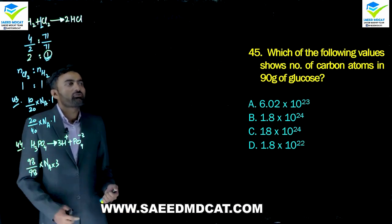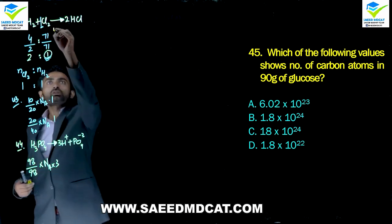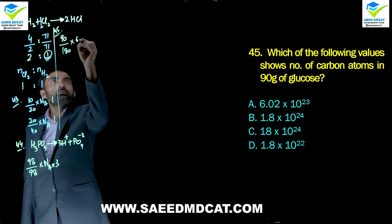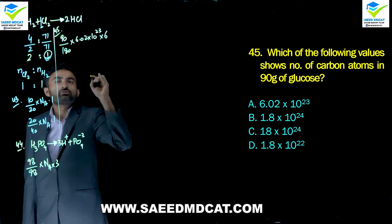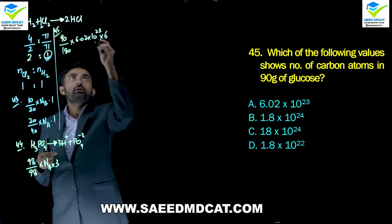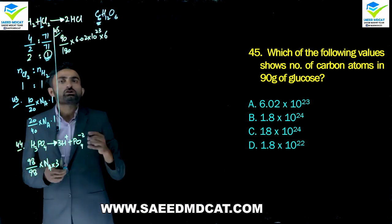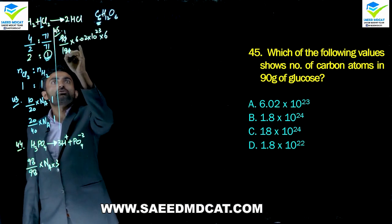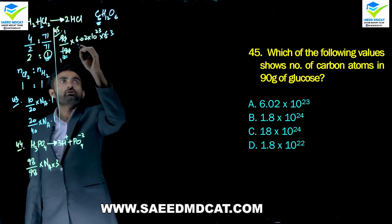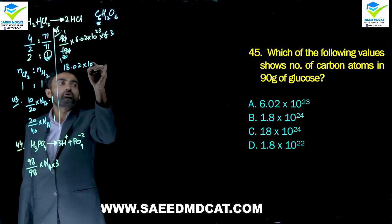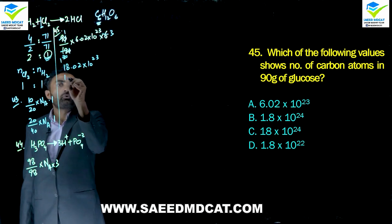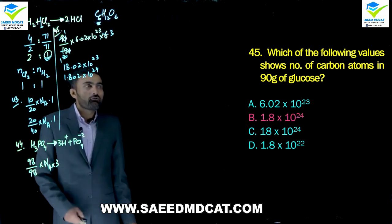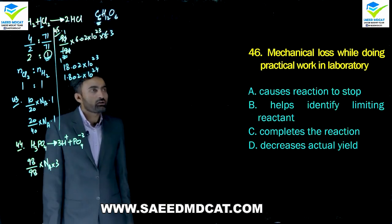Question 45: Number of carbon atoms in 90 g of glucose (C6H12O6). Moles glucose = 90/180 = 0.5. Carbon atoms = 0.5 × NA × 6 = 3NA = 3×6.02×10²³ ≈ 1.8×10²⁴ or 18×10²³. Beta option is correct.